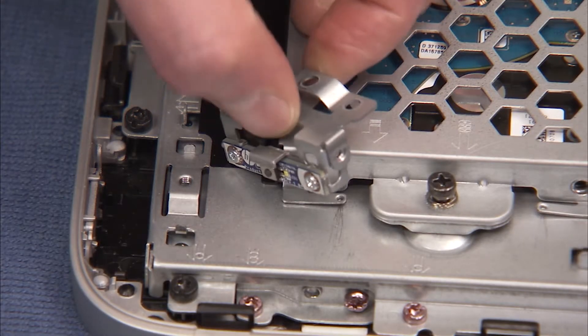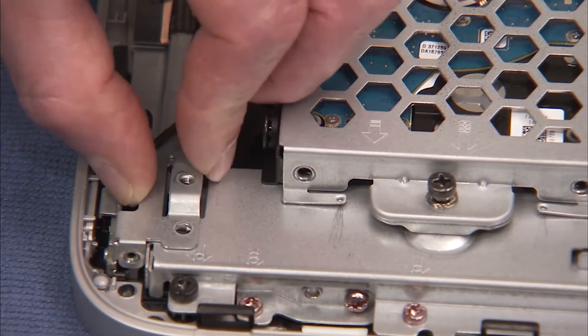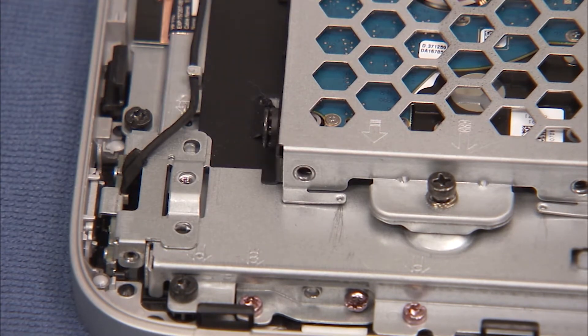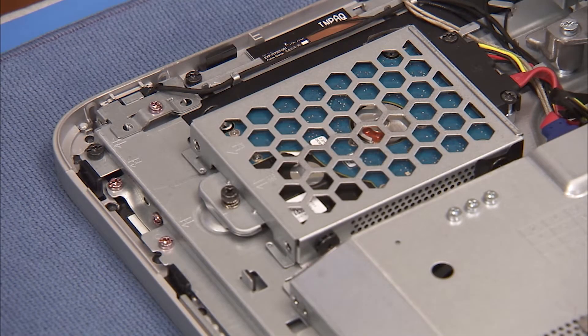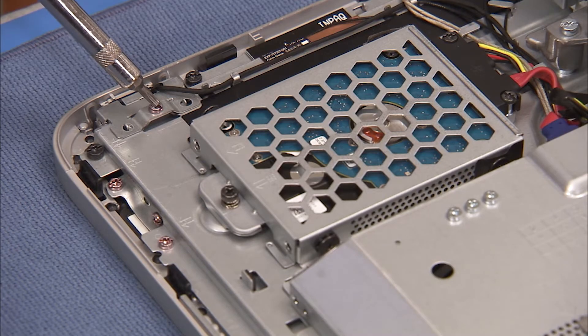Align the two holes of the bracket over their slots until the bracket is correctly seated. Secure the power button board bracket to the middle frame with its pink Torx head screw.